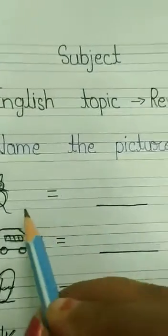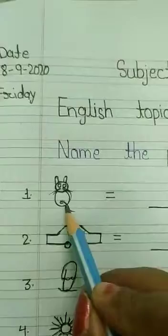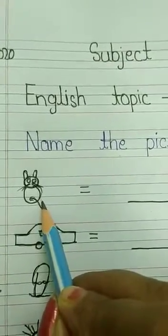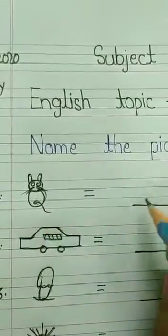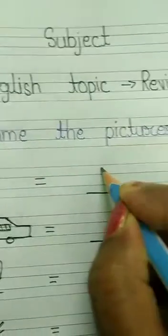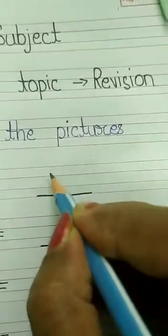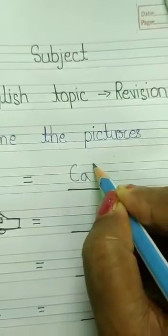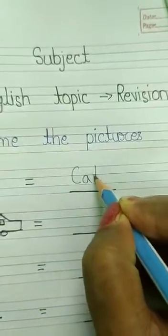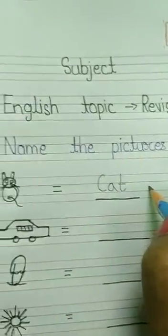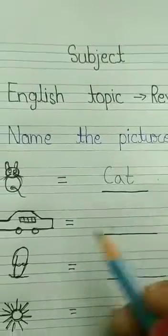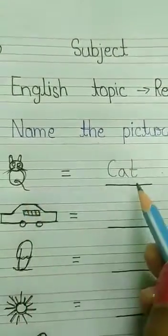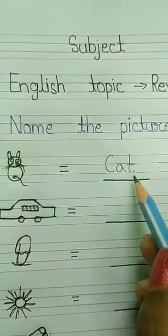अब देखो यहाँ picture कौन सा बना है? Cat बनी है ना. C-A-T, cat. Cat means बिल्ली. तो यह C-A-T जो है ना इसको हम यहाँ पर लिखेंगे — C-A-T. Cat means बिल्ली, यह cat का चित्र था, तो इसका नाम हमने लिखा cat.